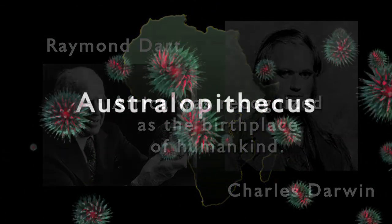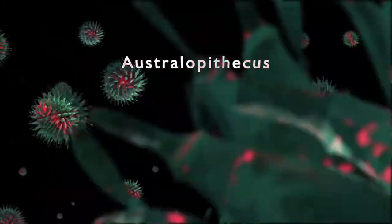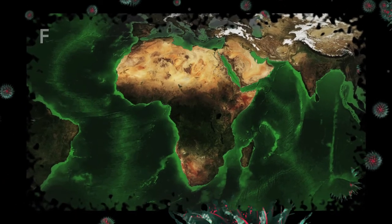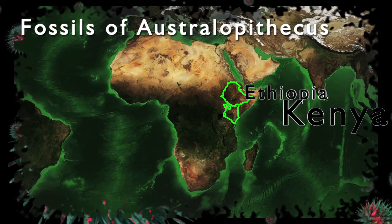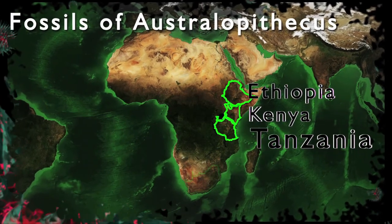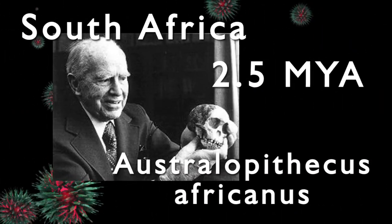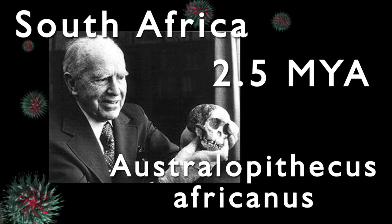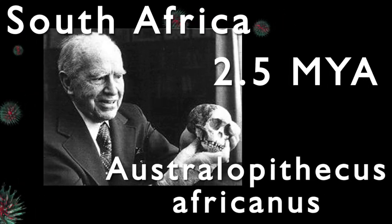Let's begin our look at the genus Australopithecus with an overview of the fossil finds in eastern Africa. Fossils of Australopithecus have been found in Ethiopia, Kenya, Tanzania, and South Africa. In the last few minutes, we looked at the discovery of the Taung child in South Africa by Raymond Dart. The Taung child is dated at 2.5 million years in the past.